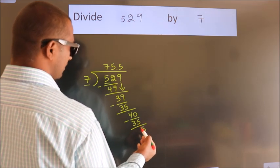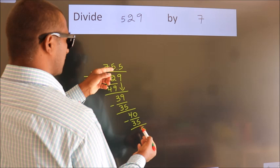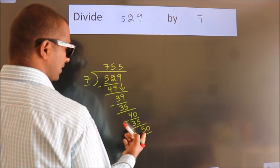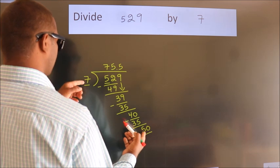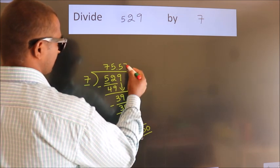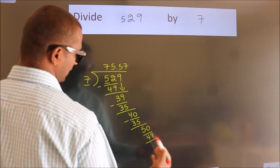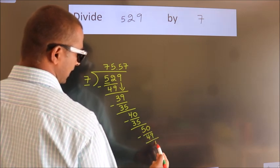After this, we already have the decimal. So directly take 0. So 50. A number close to 50 in 7 table is 7 7s 49. Now we subtract. We get 1.